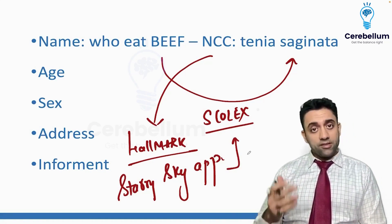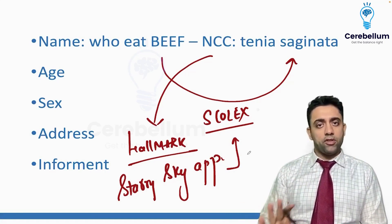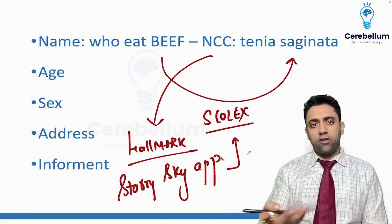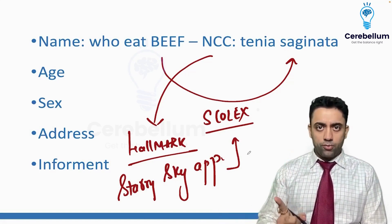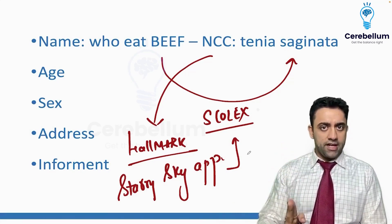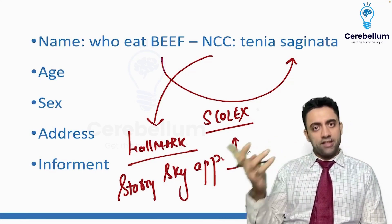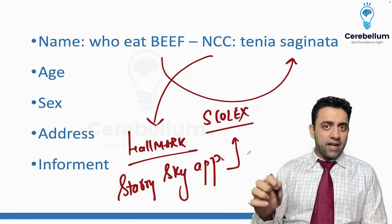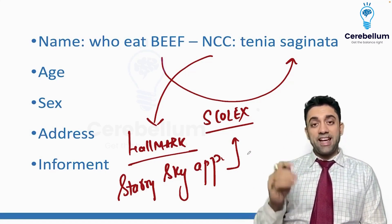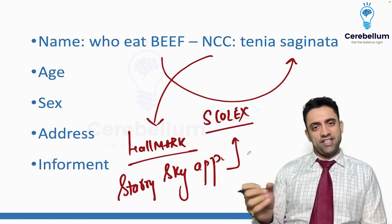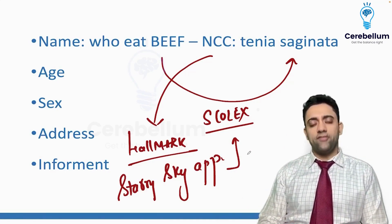I'll give you extra information as well. If I taught NCC separately it would be a one-hour topic. But on the way, I've told you: neurocysticercosis is because of eating uncooked pork — Taenia solium — and the hallmark is a starry sky appearance on MRI or CT neuroimaging. That starry sky is because we see multiple scolices — the scollex is the head of the tapeworm. That much knowledge will get you full marks.